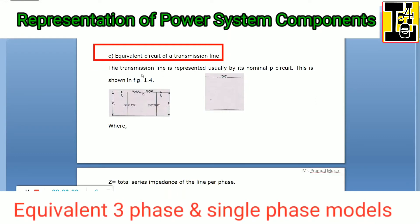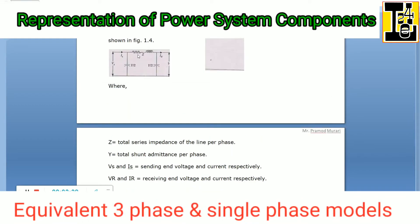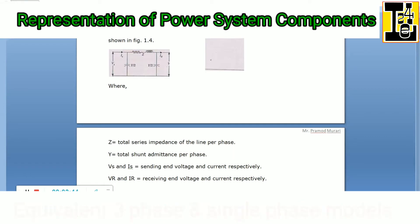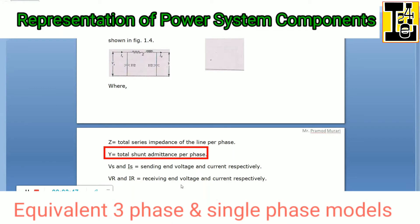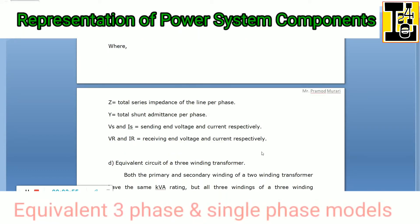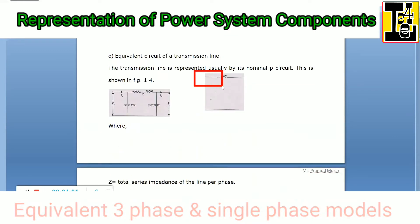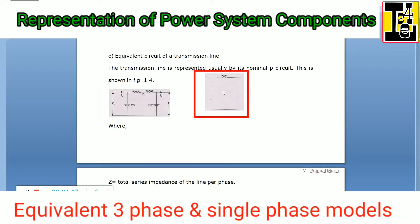The transmission line is represented usually by means of a pi circuit, which is shown here. Z is the total impedance of the line per phase and Y is the shunt admittance per phase. Vs and Is are the sending end voltage and current respectively; Vr and Ir are the receiving end voltage and current respectively. This is the equivalent circuit diagram on a single phase basis for the transmission line.